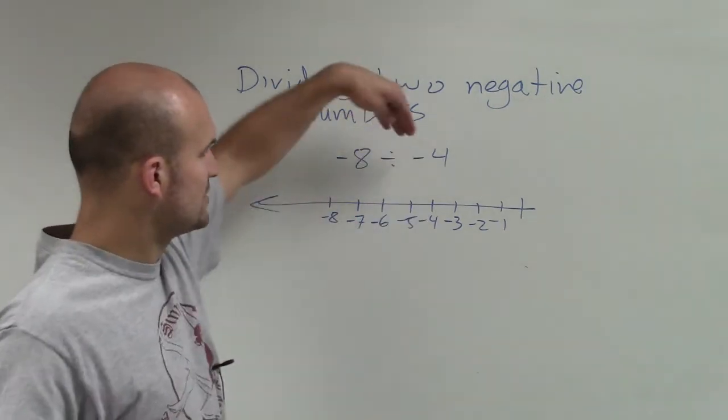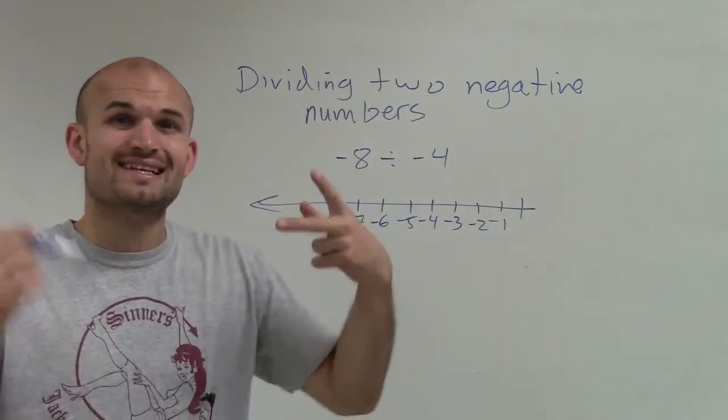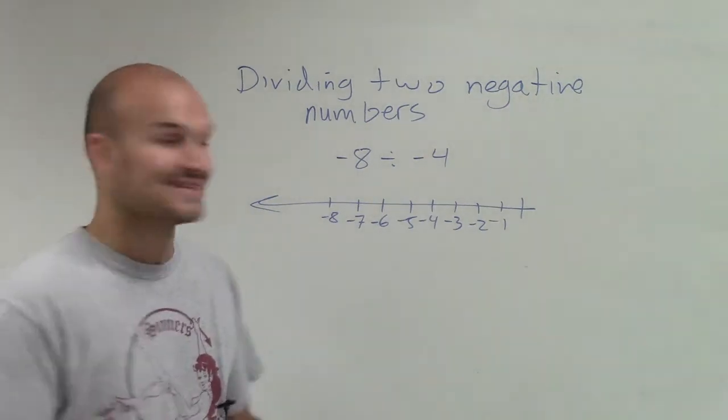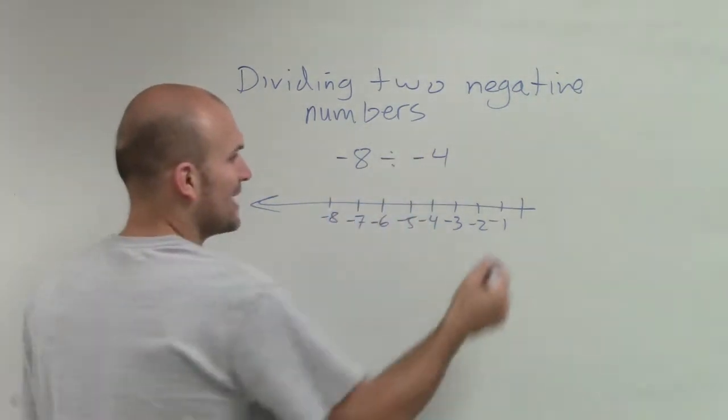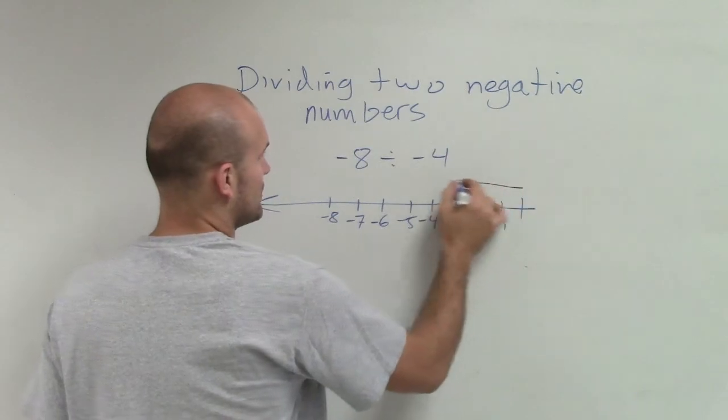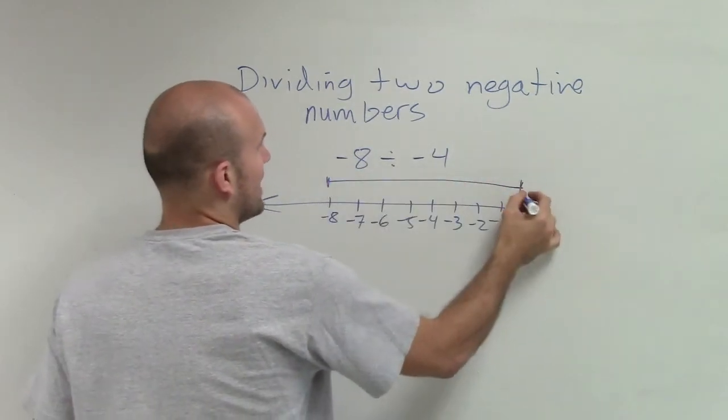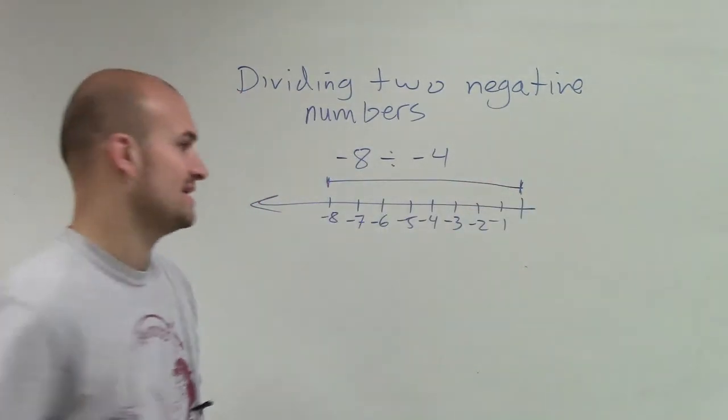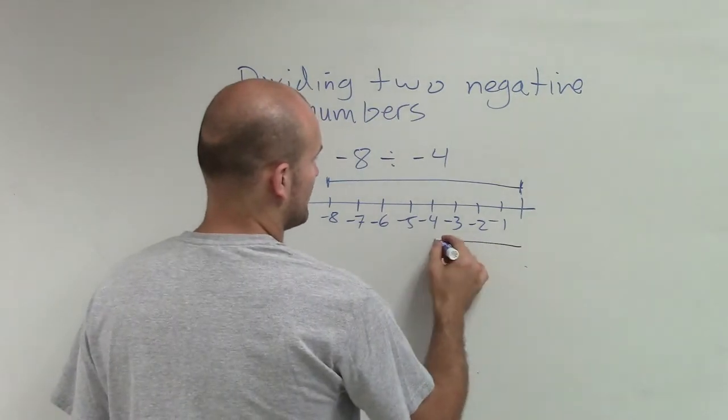And then what I want to do is divide this into segments of negative 4. So I have 0 to negative 8 as my distance. And how many ways can I divide that into segments of negative 4 distance?